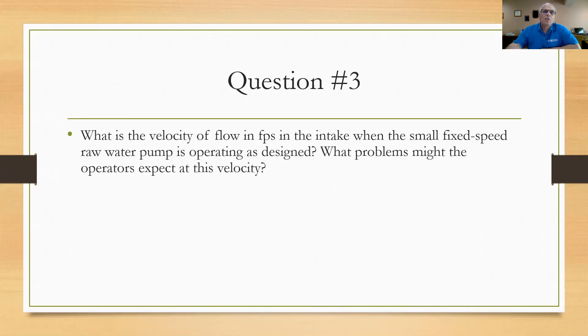Question number three states, what's the velocity of flow in feet per second in the intake when the small fixed speed pump is operated as designed? And once you've done that, why don't you list what problems might the operator expect at that velocity? Okay, so they're wanting you to figure out the velocity. So we got to get some information from the tables here. You see that the small pump is rated at 1,750 gallons per minute and they're asking us to use that flow rate as designed. So we're going to use 1,750 flow rate.